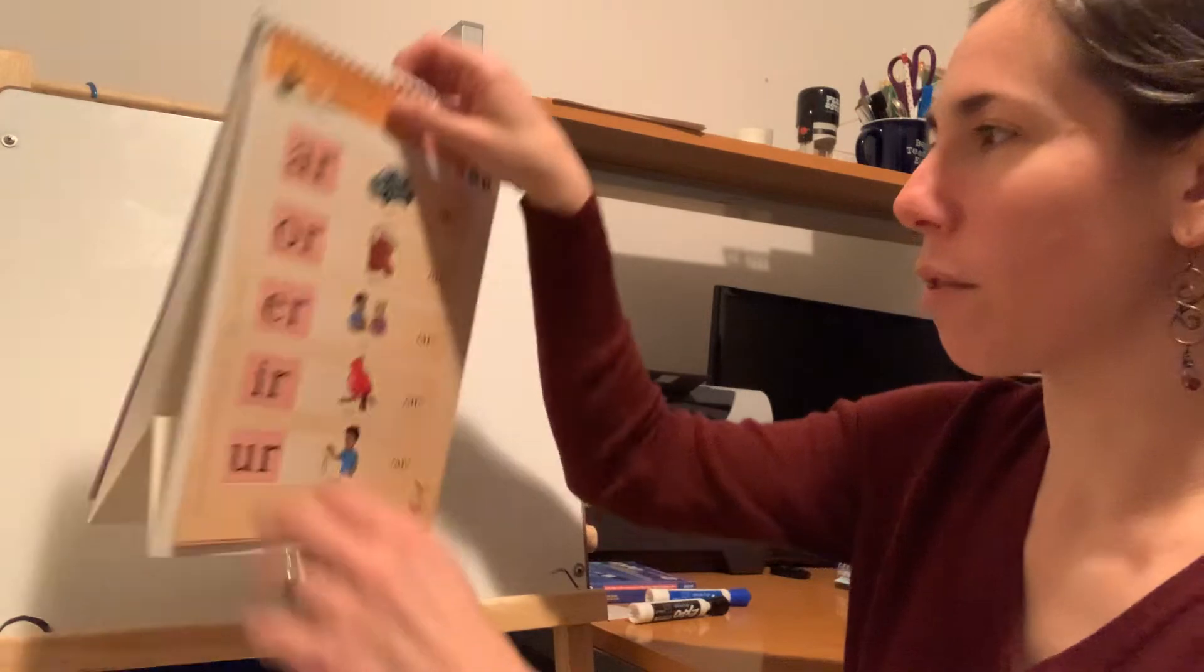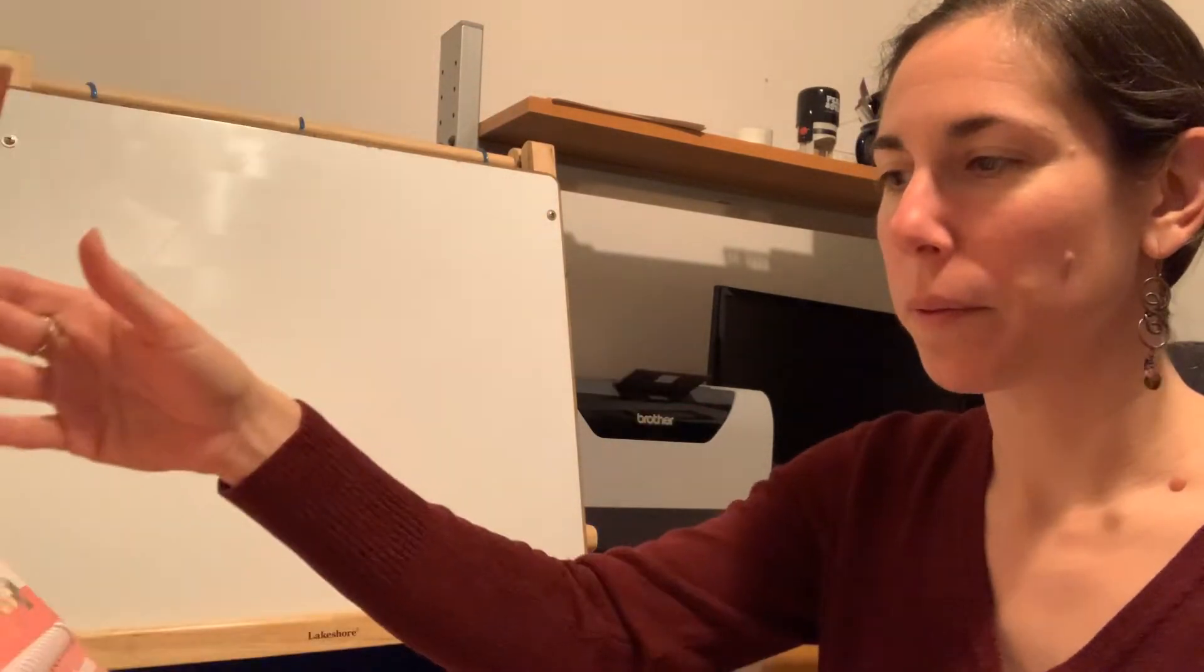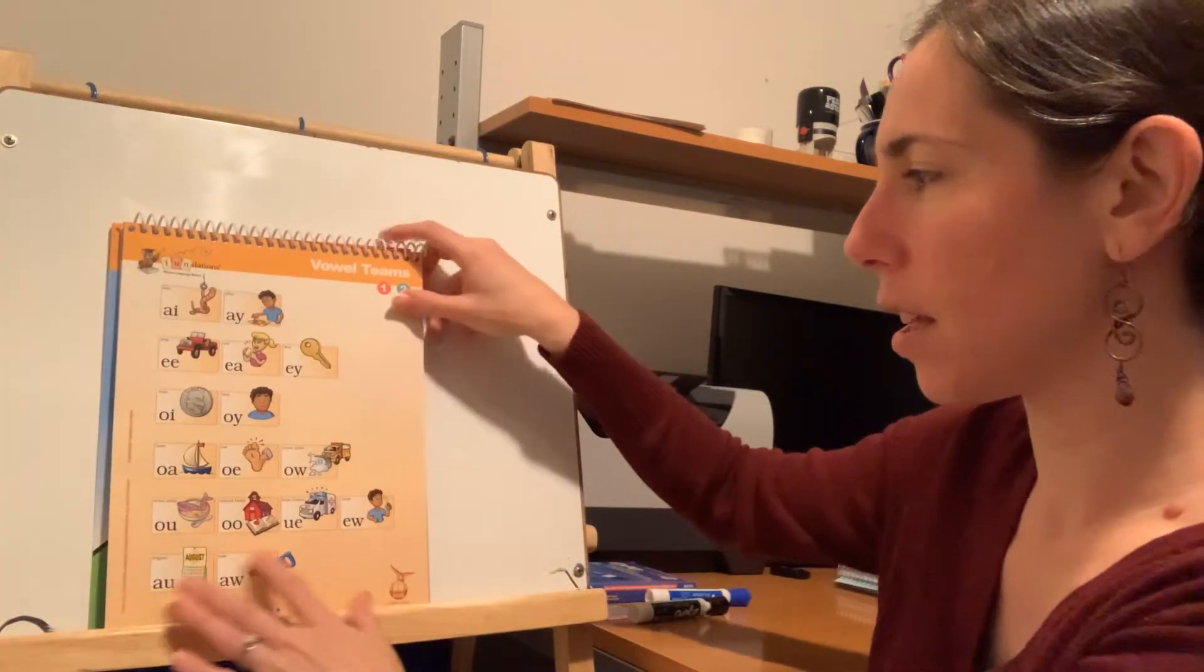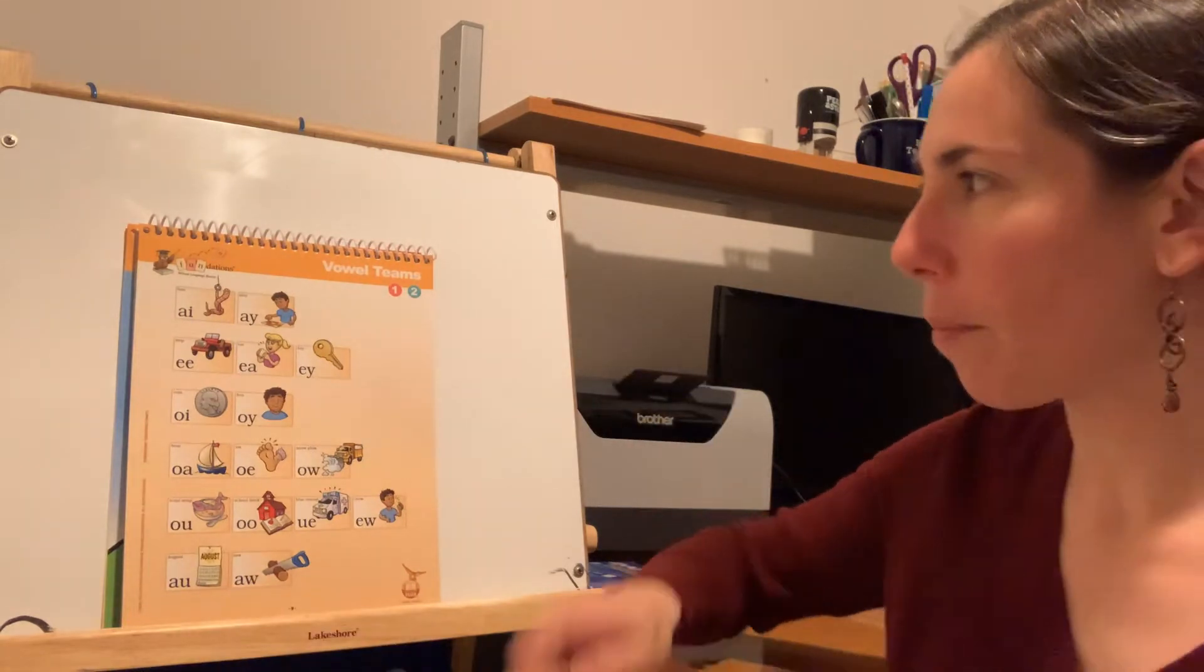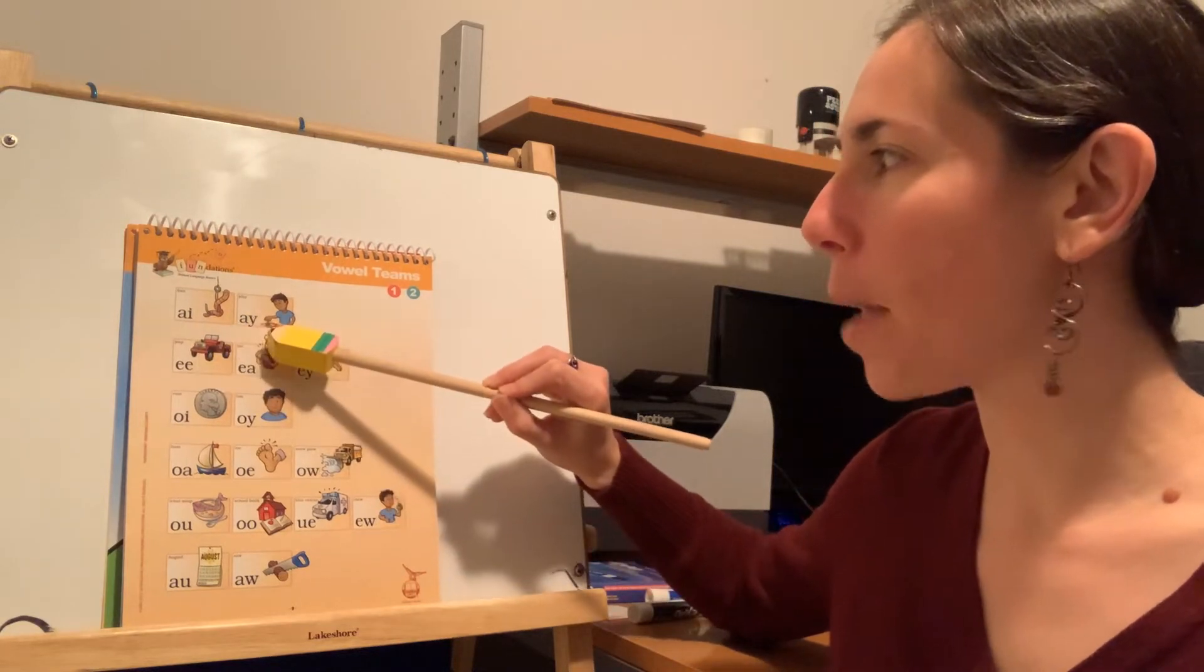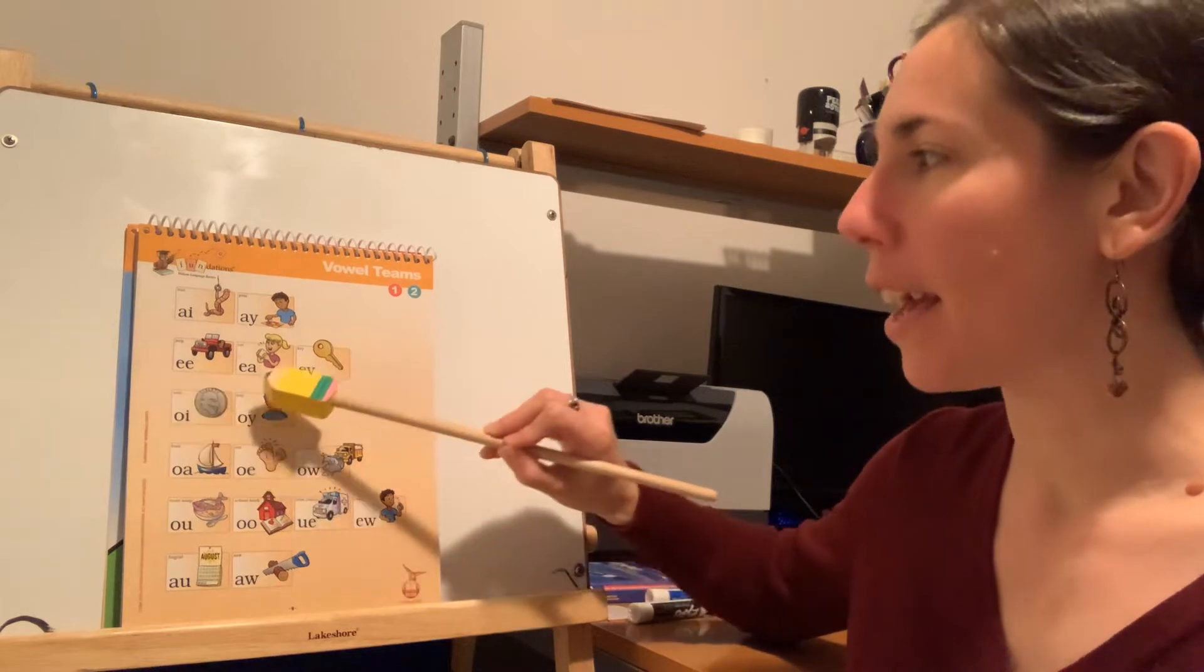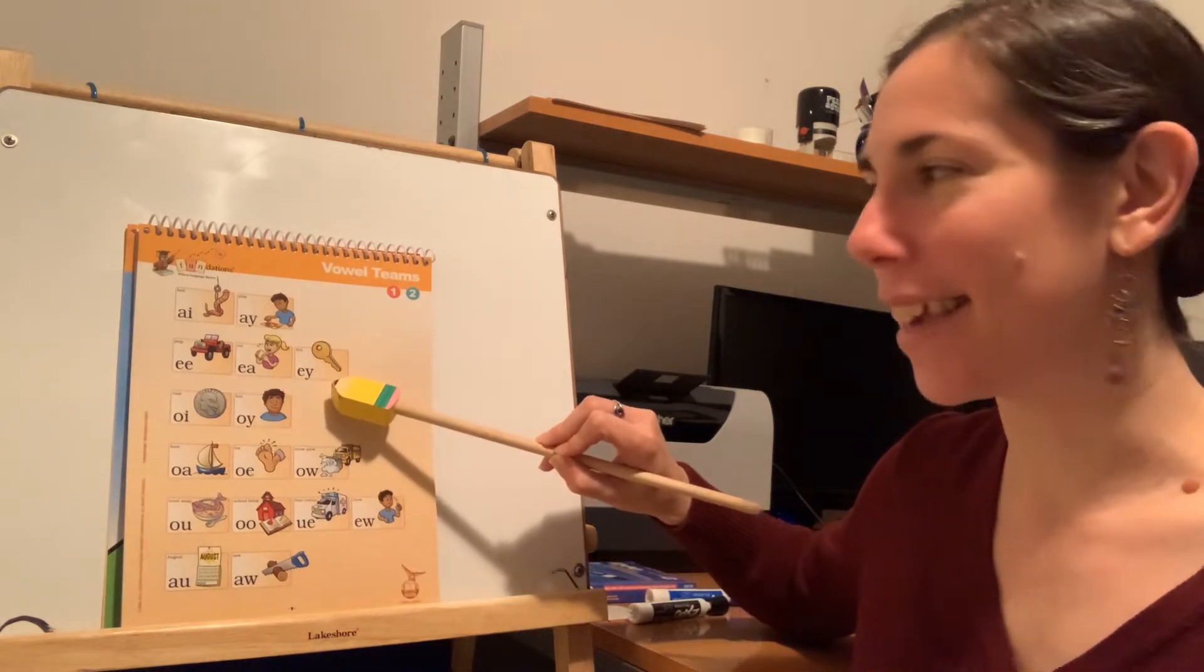We are also going to review our vowel teams today. There they are, our vowel teams. Make sure you can see those. We're going to start with A-I bait, A-Y play, E-E jeep, E-A eat, E-Y key.